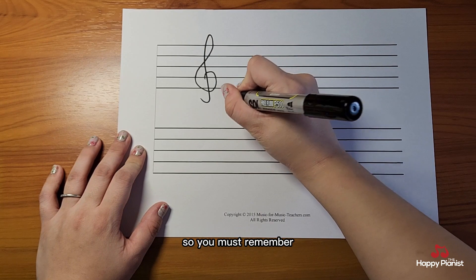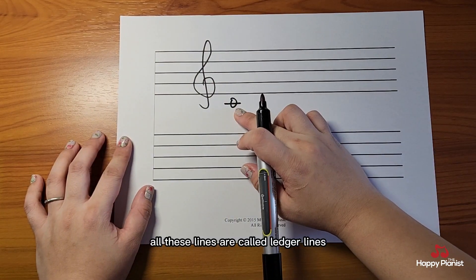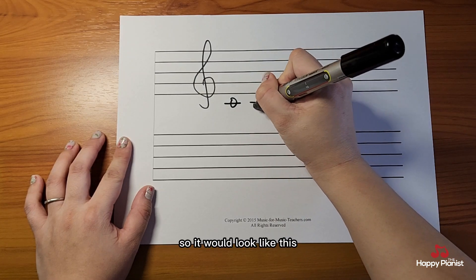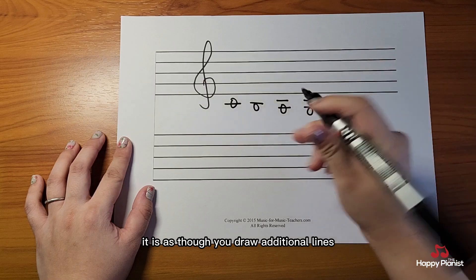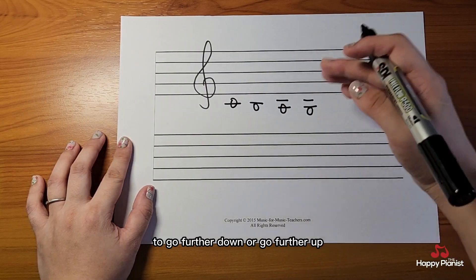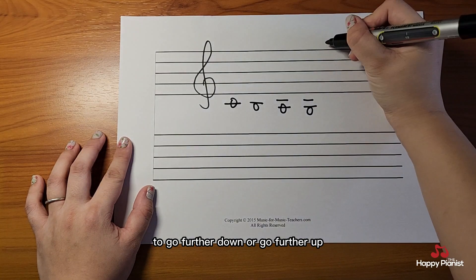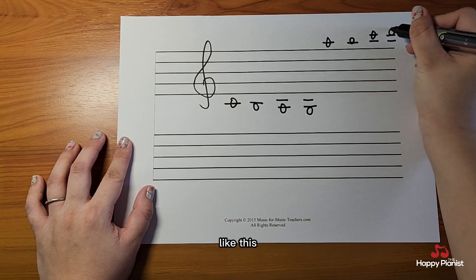So you must remember, the notes outside the staff, all these lines are called ledger lines. So it would look like this. It is as though you draw additional lines outside the staff to go further down or go further up.